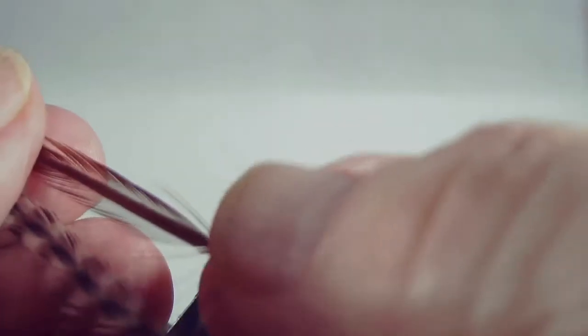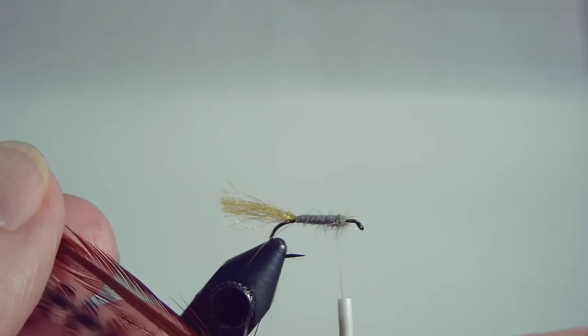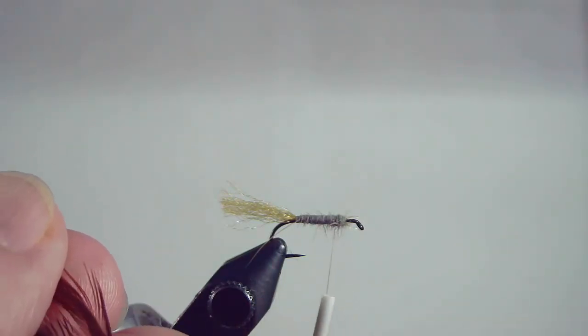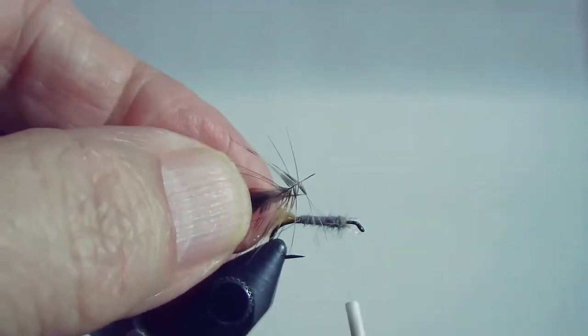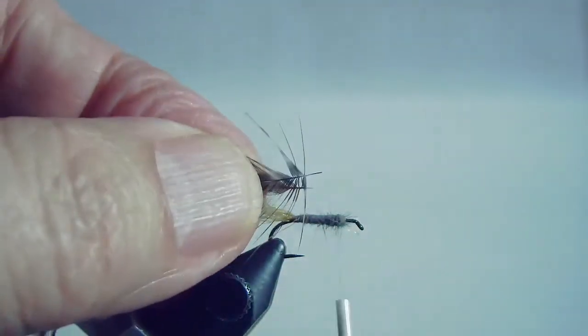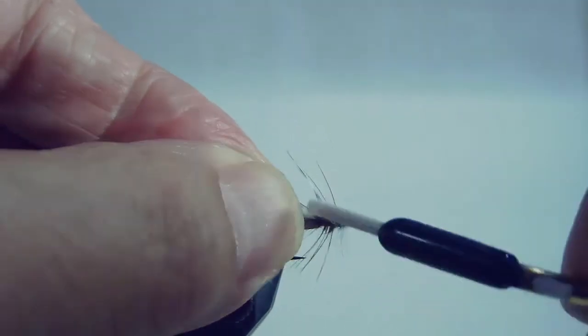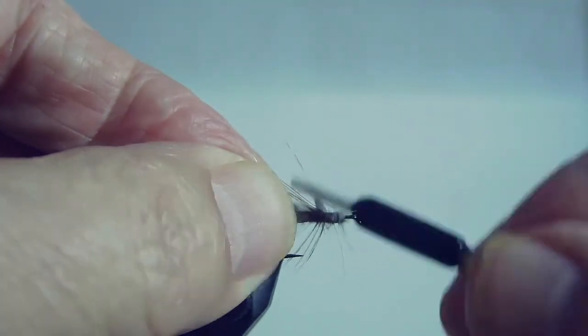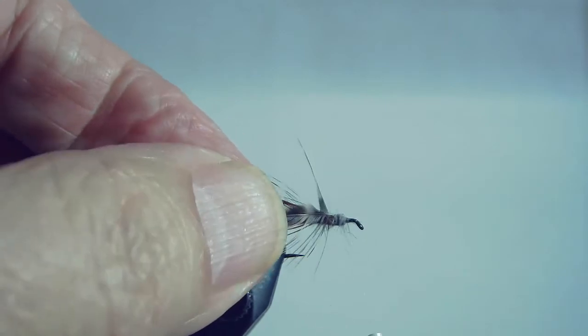Now an Adams fly as you saw in the photo consists of two hackles one brown one grizzly. These are measured as size 12. It's important that you have the right size or a little smaller than the right size for most of your dry fly patterns and you want to secure it and then just carefully wrap forward both hackles at once.